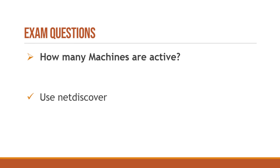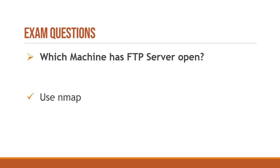The questions in the exam are very specific and straightforward. The first common question is: how many machines are active? You just need to use the net discover command to scan your entire network to find all active machines. In my case there were three additional active machines excluding the Parrot OS and Windows boxes, so the total was five. Answers can be multiple choice or a text box — in this case it was multiple choice and five was the correct answer.